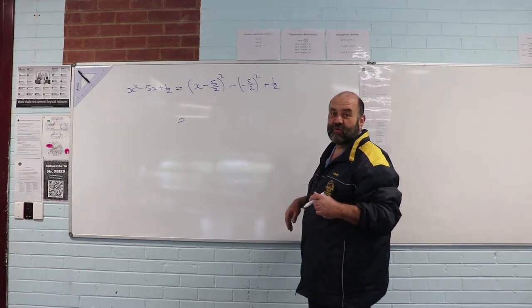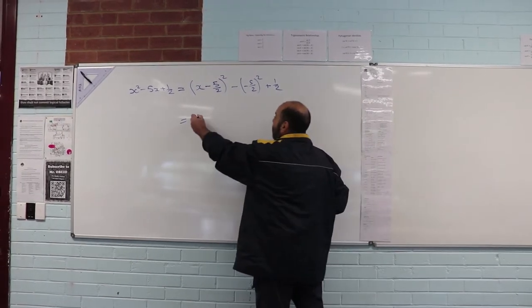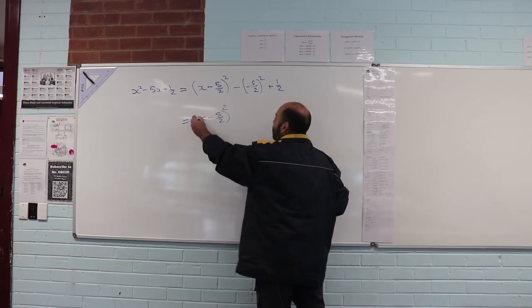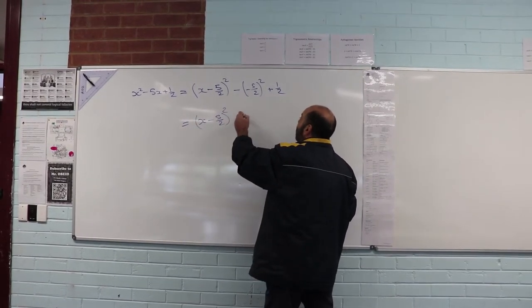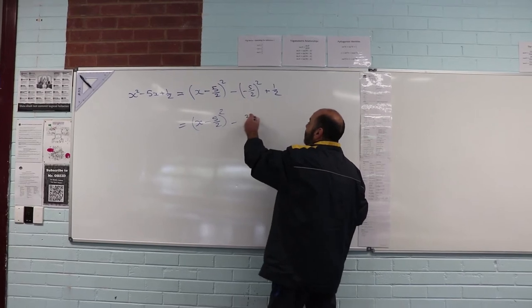Now I just need to neaten up what I see over here. So over here I've got (x - 5/2)². That is 25/4.